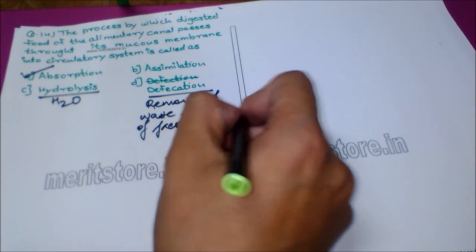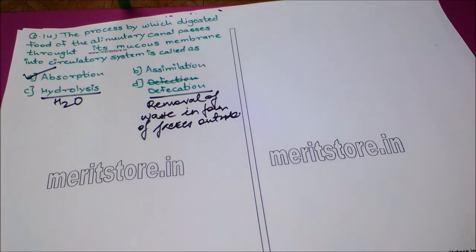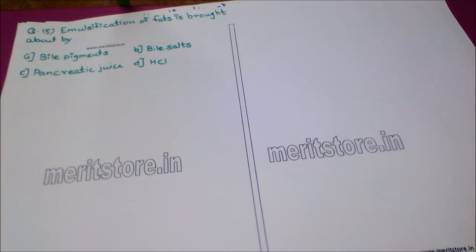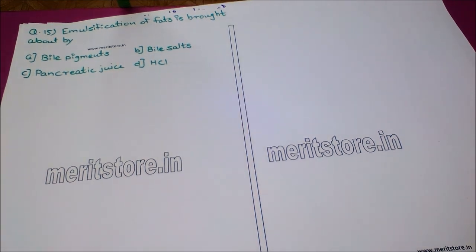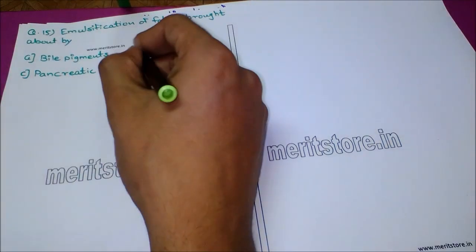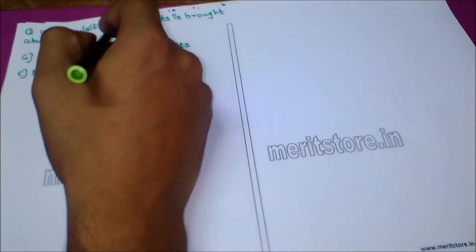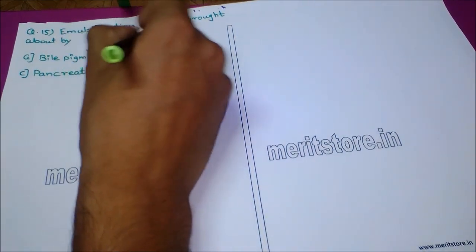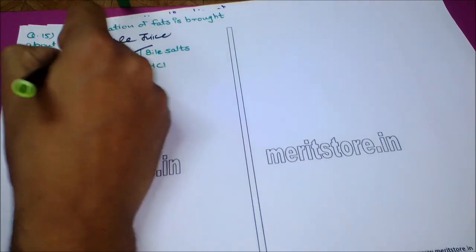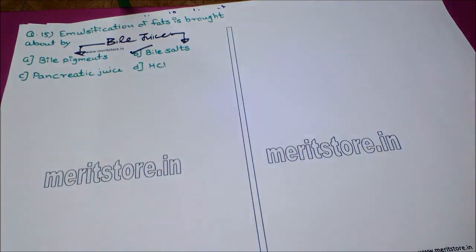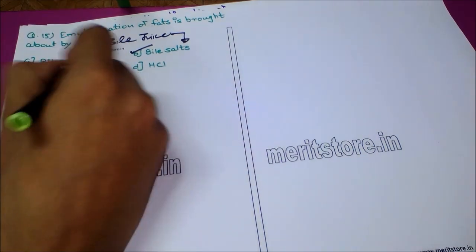The next question: emulsification of fats is brought about by — option A: bile pigments, option B: bile salts, option C: pancreatic juice, option D: HCl. Emulsification of fats means the breakdown of complex fats into smaller units; this process is carried out by bile salts. Bile juice contains two components — bile pigments and bile salts — of which bile salts handle emulsification, while bile pigments impart color to the urine. The answer is option B, bile salts.